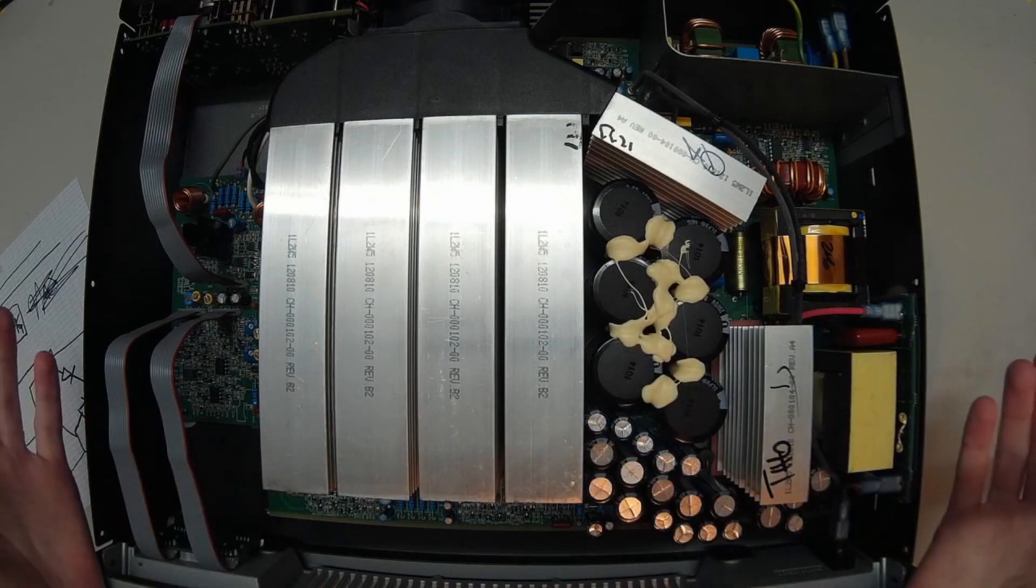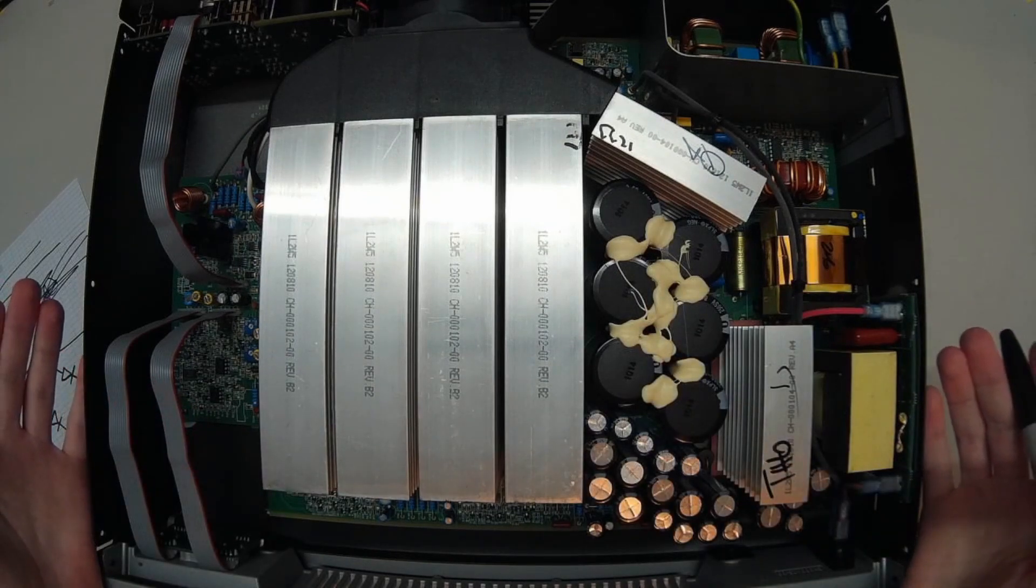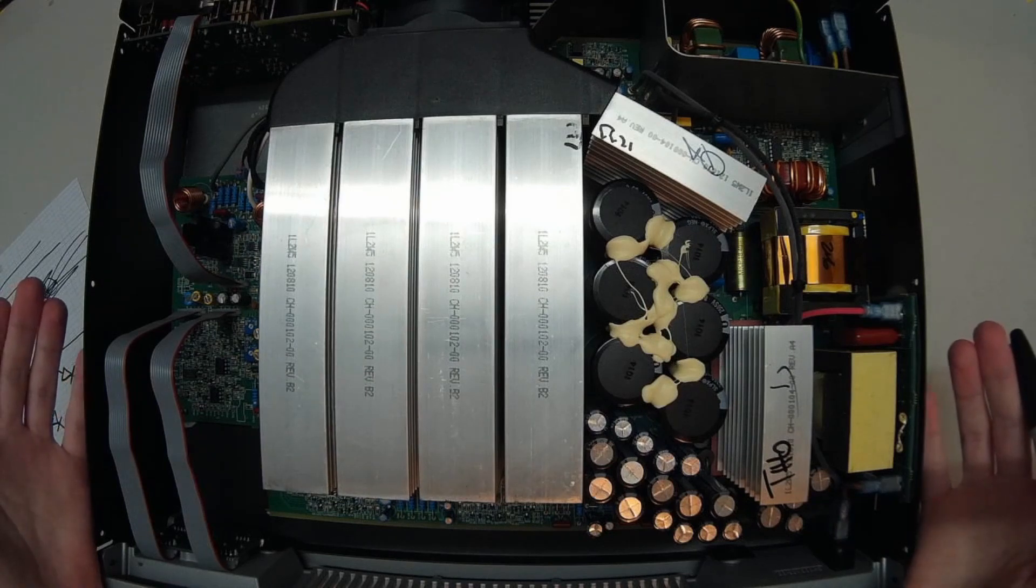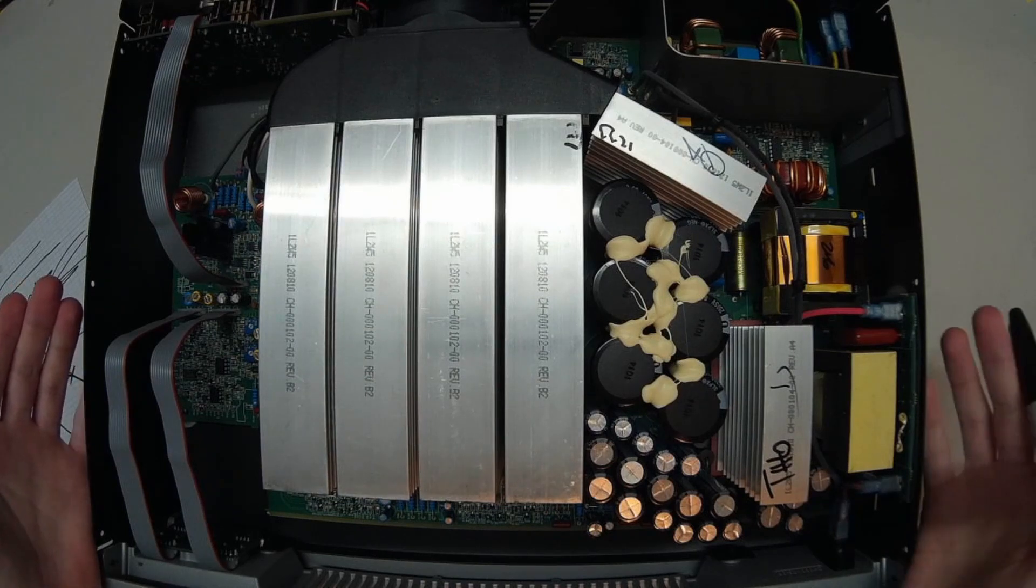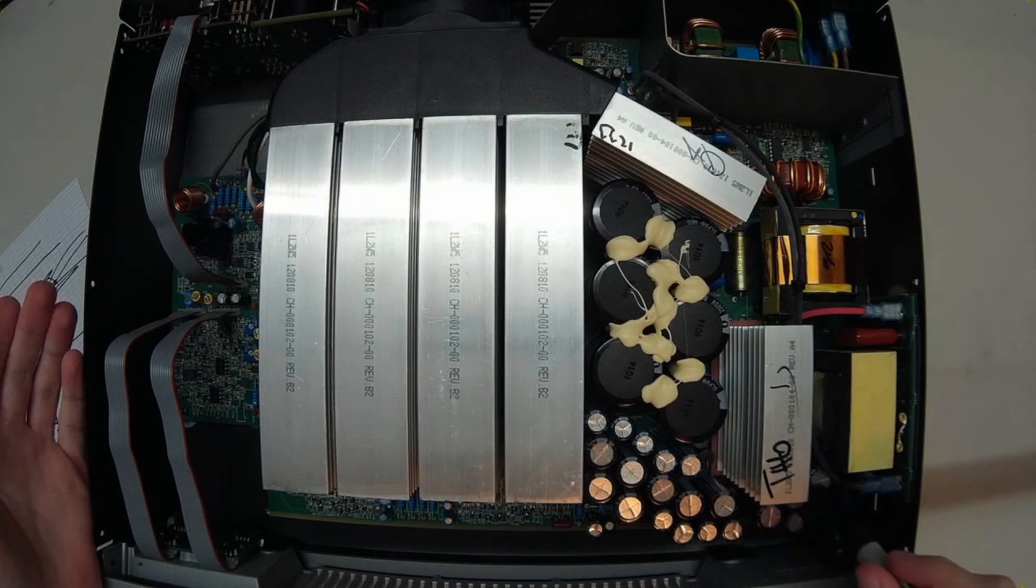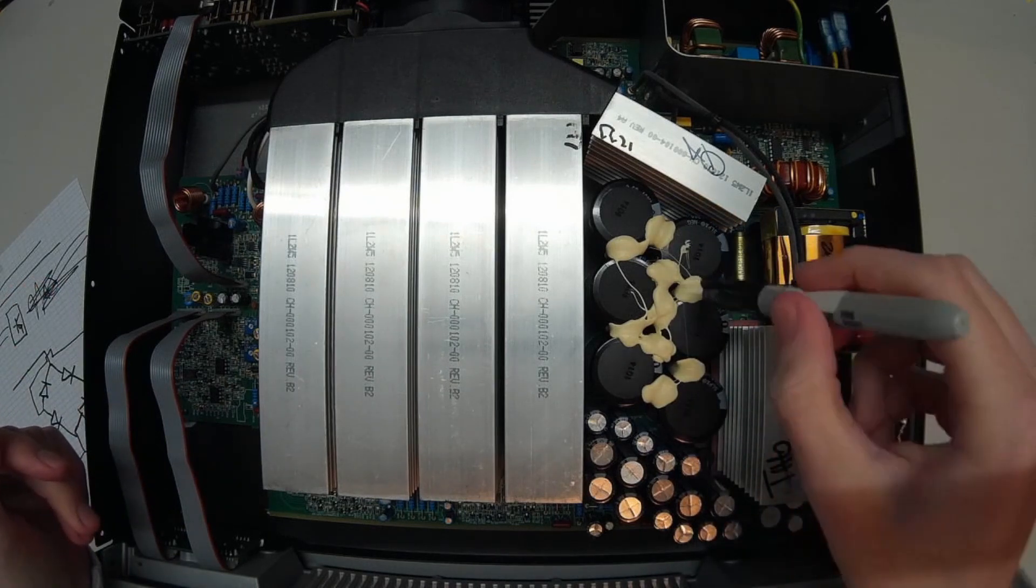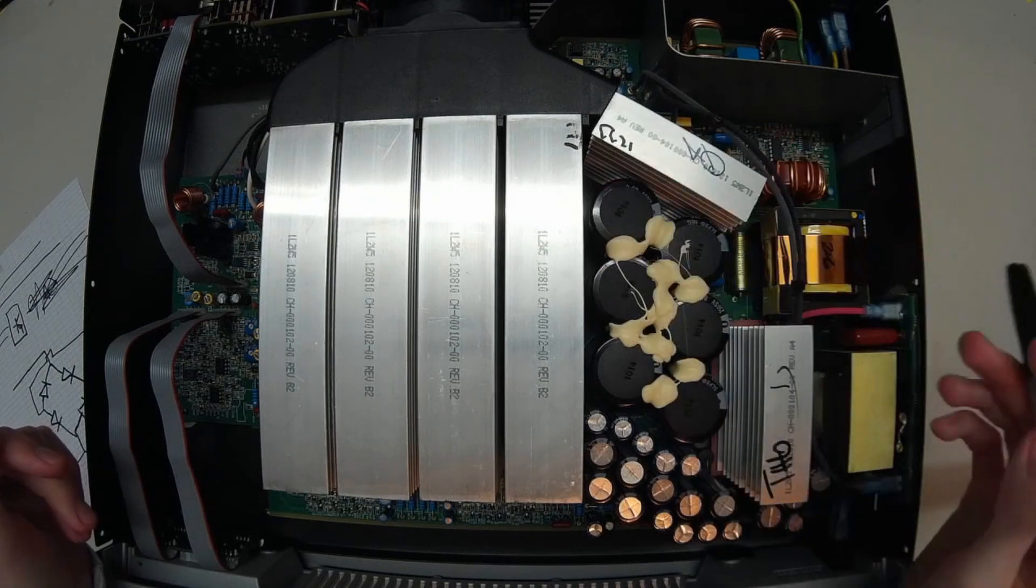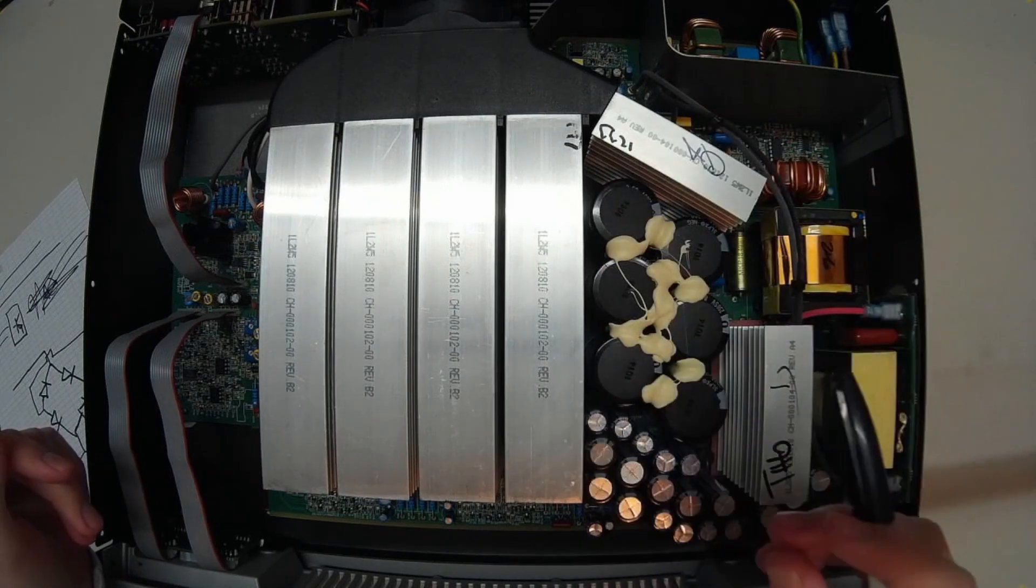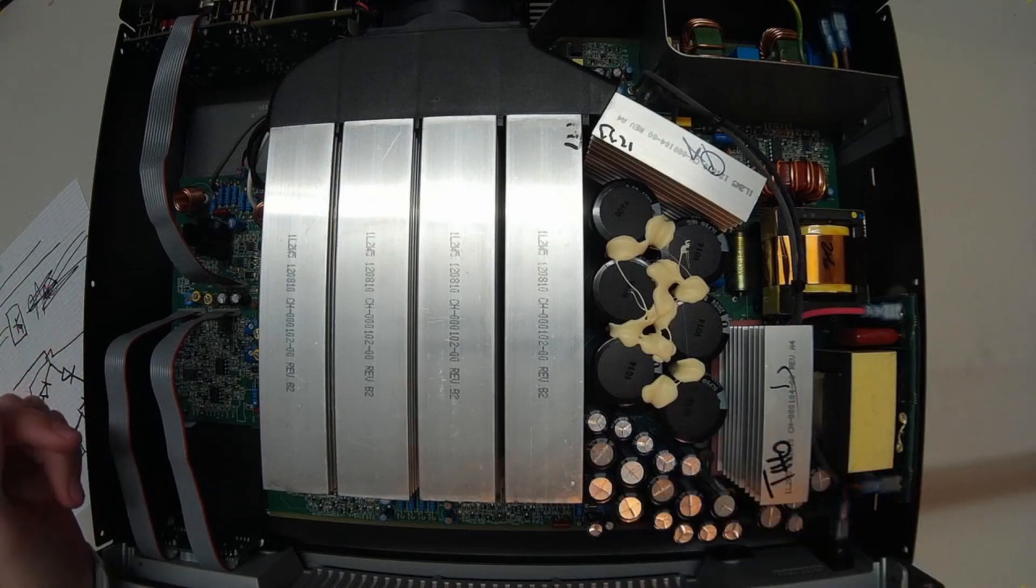And because you have this huge reserve, you can also actually have peaks, for example on a subwoofer array, which exceeds the power that your main supply can provide. Because when you have a bass hit for example, you can draw huge peaks from this capacitor bank, and they can slowly recharge after that bass hit just from the main supply.